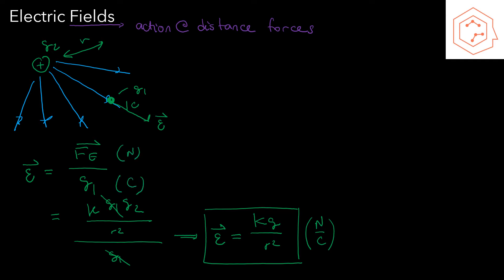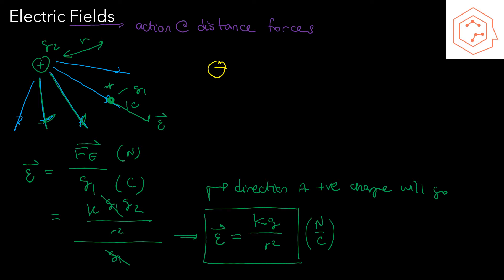This has units of newtons per coulomb, since we have force in newtons over q1 in coulombs. The electric field is defined as the direction a positive charge will go — that's why in our diagram the field lines are all radiating outwards, because any positive charge will repel. If we have a negative charge, then any positive charge is going to be attracted towards it.